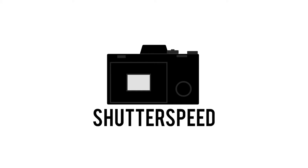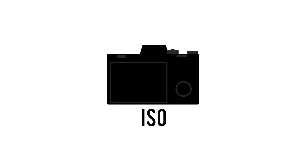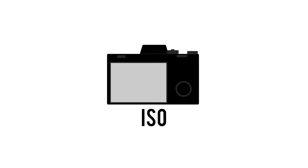ISO is the setting that controls the sensitivity of light in your image. The ISO is different from the other two settings we talked about, which were the shutter speed and the aperture of your camera. Those two are mechanical. The ISO is digital enhancement.